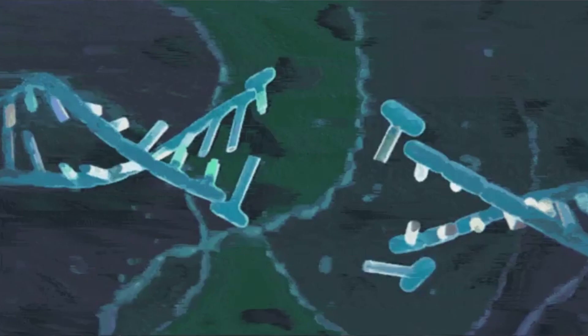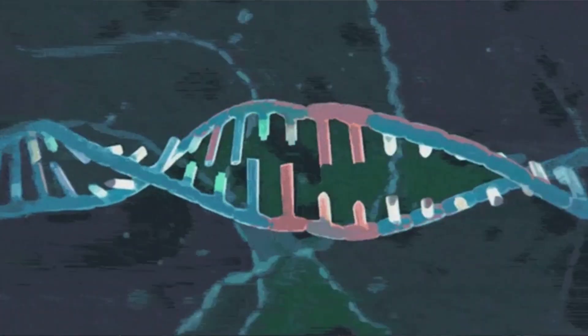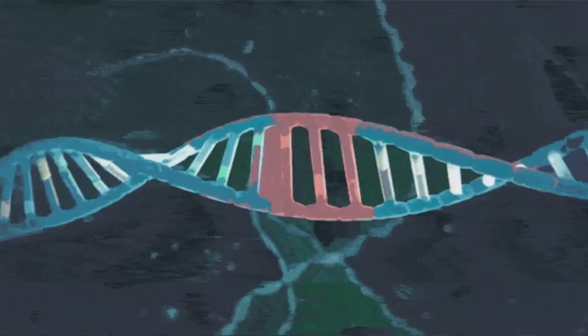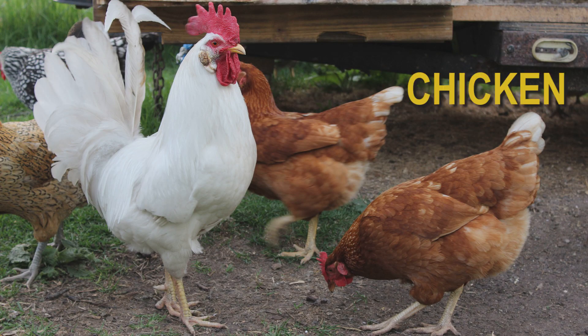So the Gallus gallus laid an egg and the Gallus sonneratii fertilized it. But when the genes from the Gallus gallus and Gallus sonneratii fused, they combined in a new way, creating a mutation that accidentally made the baby different from its parents. Although it took millennia for the difference to be noticed, that egg was different enough to become the original progenitor of a new species now known as the chicken.